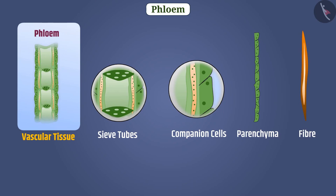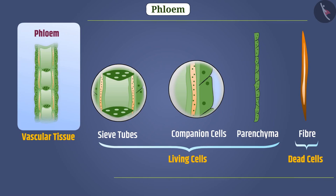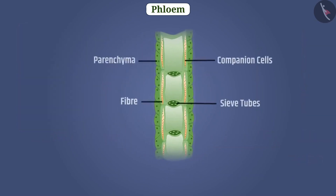Among these cells, sieve tubes, companion cells, and phloem parenchyma are living cells and phloem fiber are dead cells. Like xylem, all cells of phloem are connected to each other like a tube.